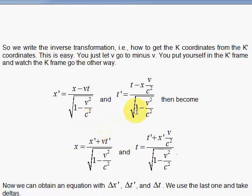The inverse transformation, you can do it two ways. You can do it the long way or the short way. The long way is to solve these two equations with two unknowns, X and T. Solve for X and T, and you get this. But that's algebra.